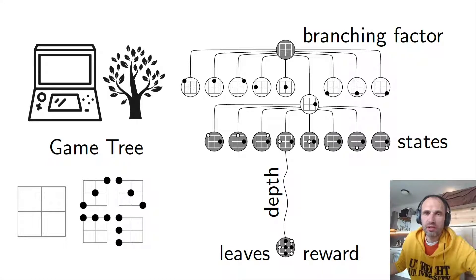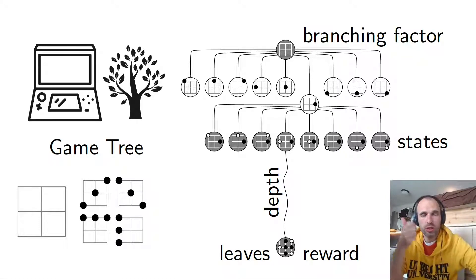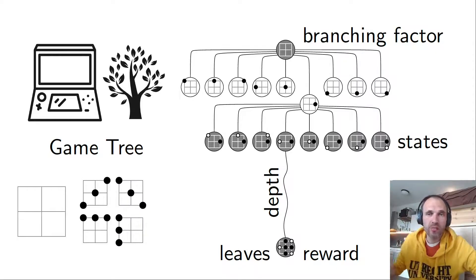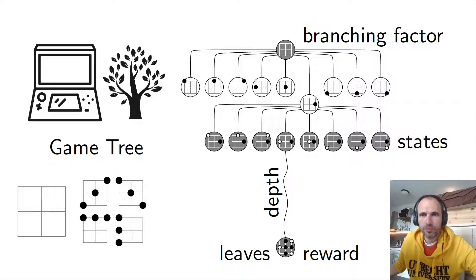The branching factor says how many children a node has. There's a distinction between the branching factor of one node, which is just the number of children, and the typical branching factor. There's also the max branching factor, which is the largest branching factor — in tic-tac-toe that would be nine. A state encodes all the information you need in order to make the next move, and it would be a node of this game tree.